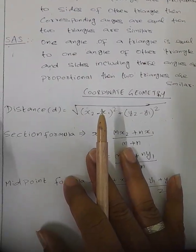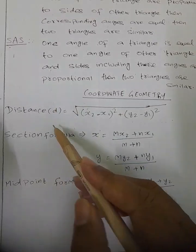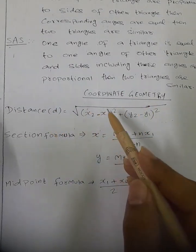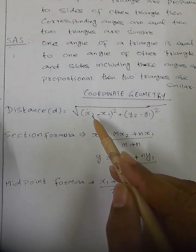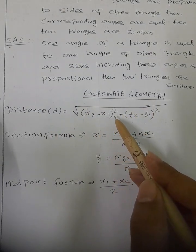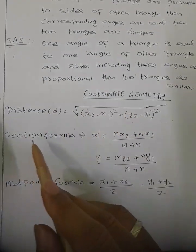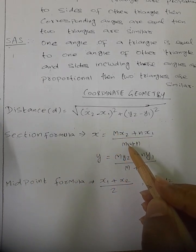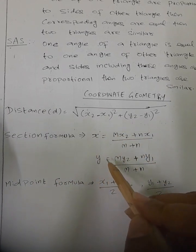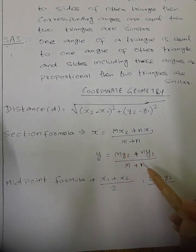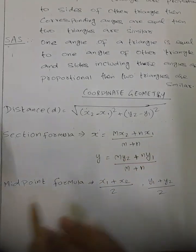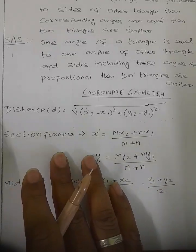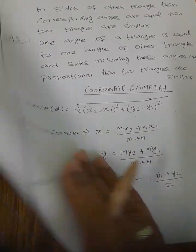Next, coordinate geometry. Important formulas: Distance formula equals root of (x2 minus x1) whole square plus (y2 minus y1) whole square. Section formula: x equals (m times x2 plus n times x1) divided by (m plus n), y equals (m times y2 plus n times y1) divided by (m plus n). Midpoint formula: x1 plus x2 by 2 comma y1 plus y2 by 2.